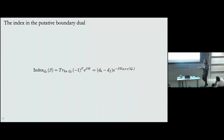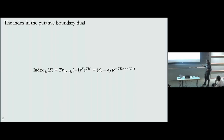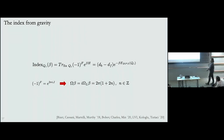The question is: if I have this quantity in the putative dual of a black hole, what type of black hole solutions do I need in order to compute this index? As emphasized by Samir, one trick that proved very useful is that I can replace the factor of (-1)^F by e^{2πi times angular momentum} or times some R-charge related to the fermion number.